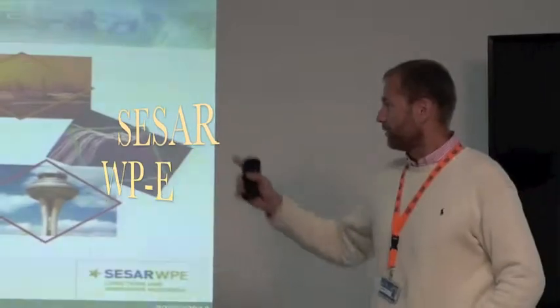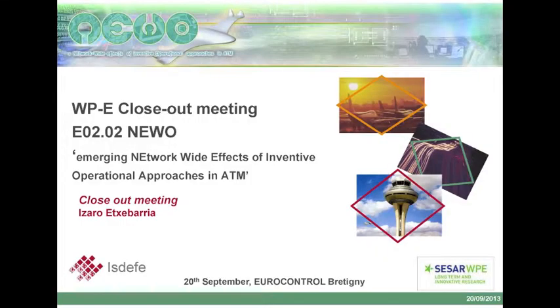Welcome to another close-out meeting, a technical presentation of the NEVO project, which is Emerging Network-wide Effects of Innovative Operational Approaches in ATM. The basic idea of NEVO was to try new approaches to demand capacity balancing and UDPP, based on a stakeholder workshop asking stakeholders how flights should be prioritized in case of capacity shortcomings, and to study using complex systems approaches which emerging effects these prioritization concepts will produce.